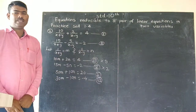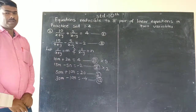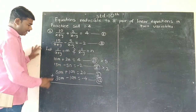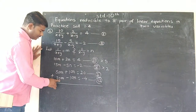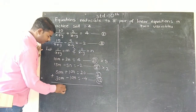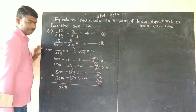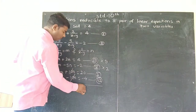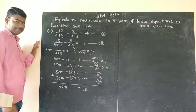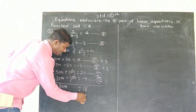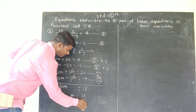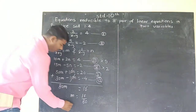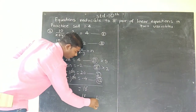Now we add equations 5 and 6 together. Adding gives 50m plus 30m, and minus 10n plus 10n cancel out, which equals 20 minus 4. So 80m — or approximately 16m — is equal to 16, and dividing gives m is equal to 1 upon 5.